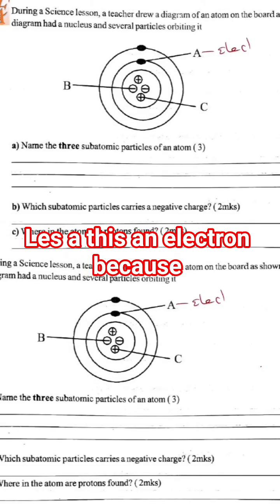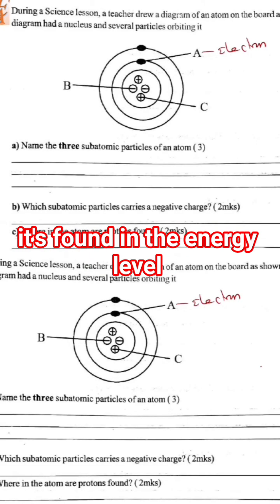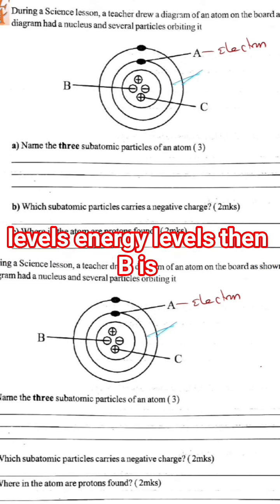Particle A is an electron because it's found in the energy levels. This is what we call energy levels.